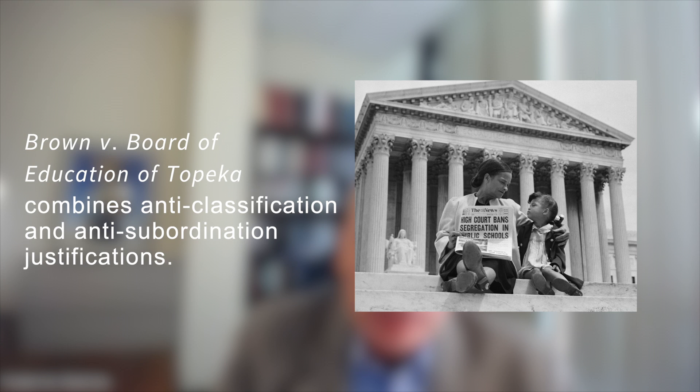Both of these rationales appeared in Supreme Court opinions well into the 20th century, even towards the end of the 20th century. Brown versus Board of Education, probably the most famous of the court's Equal Protection Clause decisions, struck down the practice of segregating schools by race — an anti-classification holding. But it did so because desegregation sent a message of African-American inferiority and white supremacy, and that's an anti-subordination justification.